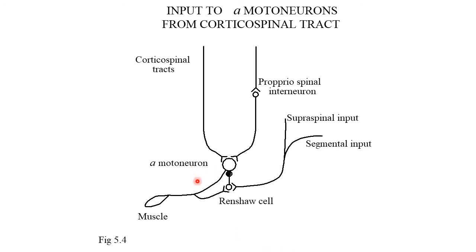At the level of the alpha motor neuron, the destination muscle may be inhibited by Renshaw cells, connected by propriospinal interneurons, or receive direct corticospinal input. Renshaw cells may be activated by segmental input, supraspinal input, or by a branch from the alpha motor neuron itself. These Renshaw cells are inhibitory in nature and inhibit the alpha motor neuron.